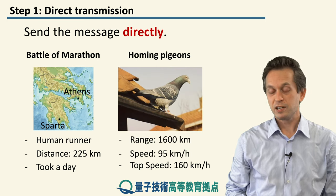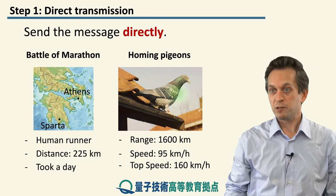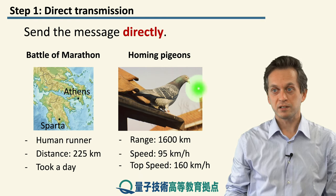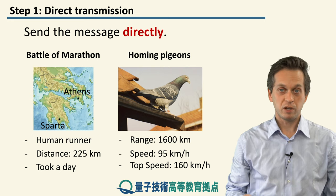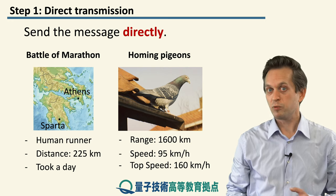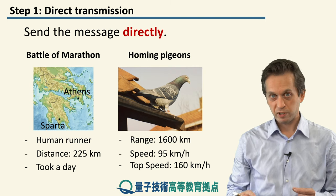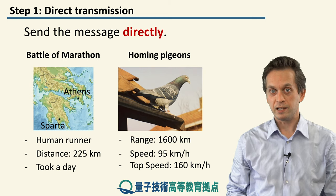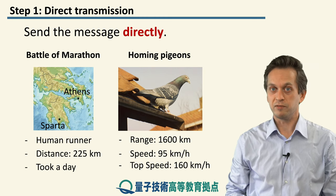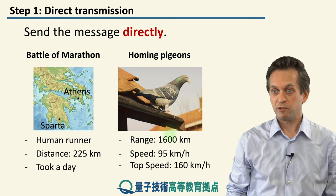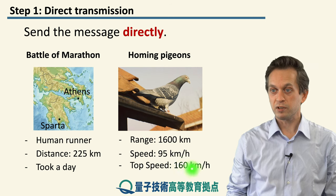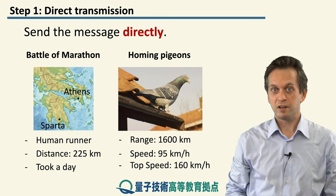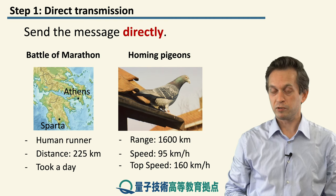Another method of sending a message directly is using birds — in particular, homing pigeons. These pigeons are specially trained to always return to their home coop. People would put them in cages while traveling, and whenever they needed to send a message back home, they'd write on a small parchment, attach it to the pigeon's leg, and let it go. The range of these birds was around 1,600 kilometers, with an average speed of around 95 kilometers per hour, and top speeds of over 160 kilometers per hour for short distances.